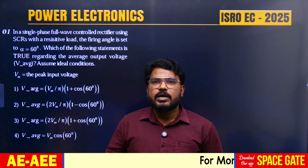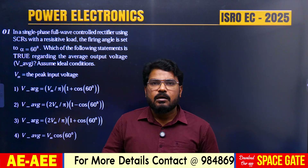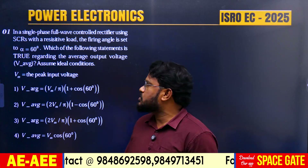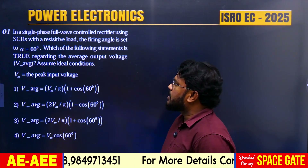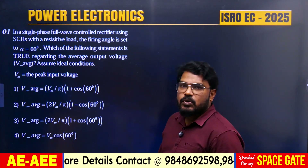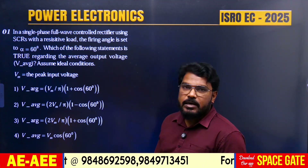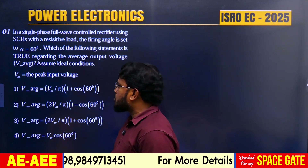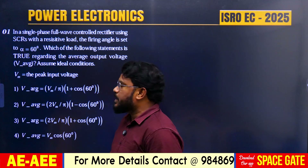Hello everyone, welcome to Sai Medha Koti, Hyderabad. In this video I would like to discuss power electronics questions from the ISRO 2025 paper. Question 1: In a single-phase full-wave controlled rectifier using SCRs with a resistive load, the firing angle is set to alpha equal to 60 degrees. Which of the following statements is true regarding the average output voltage? Assume ideal conditions; Vm is the peak input voltage.